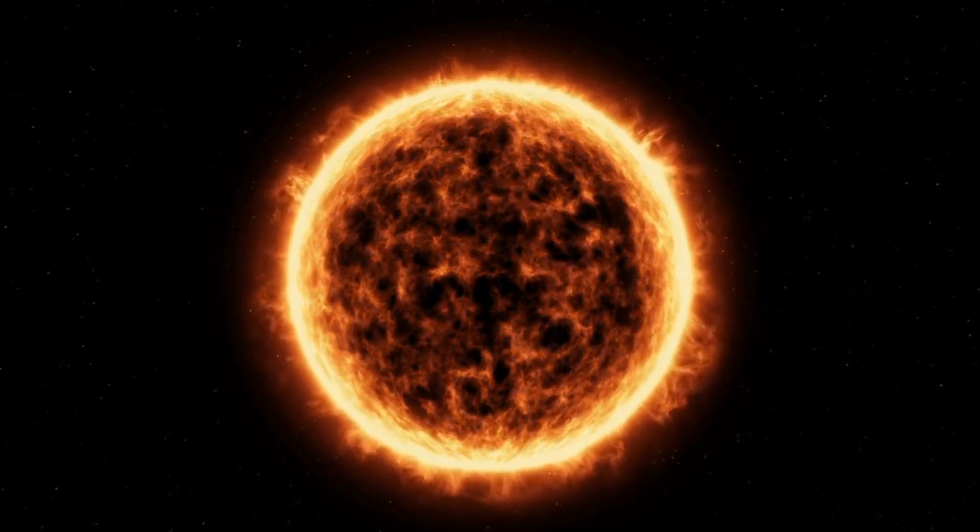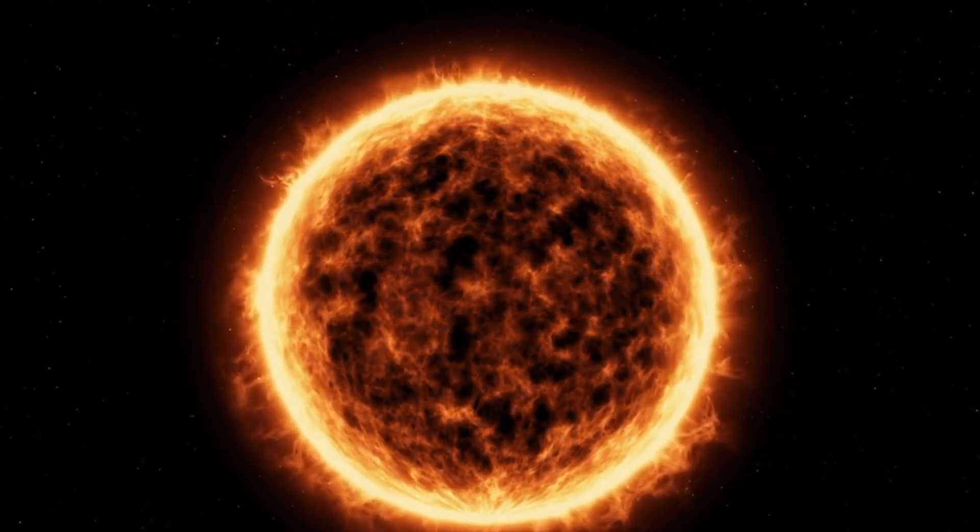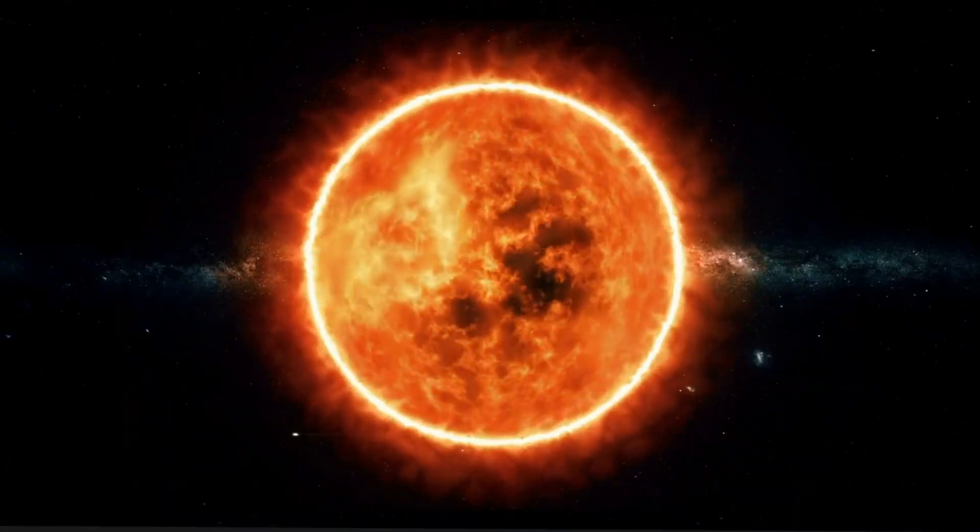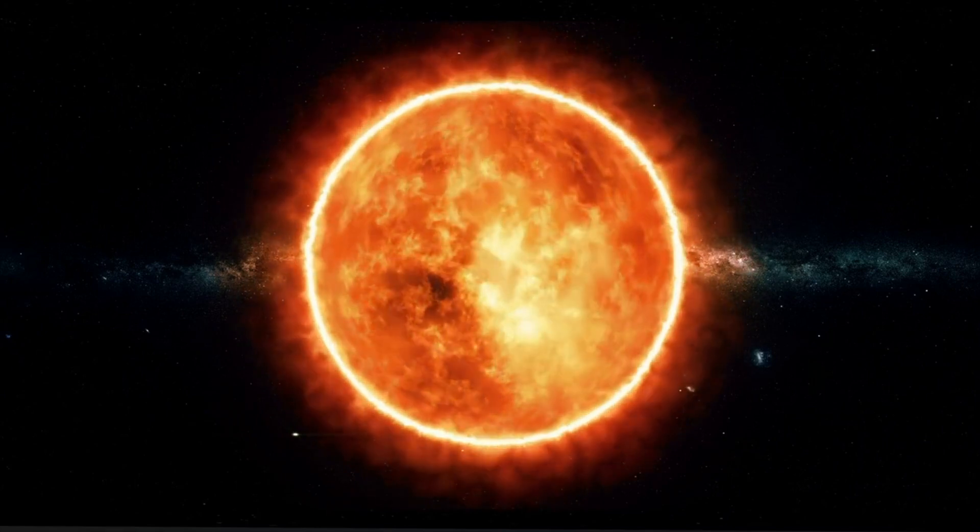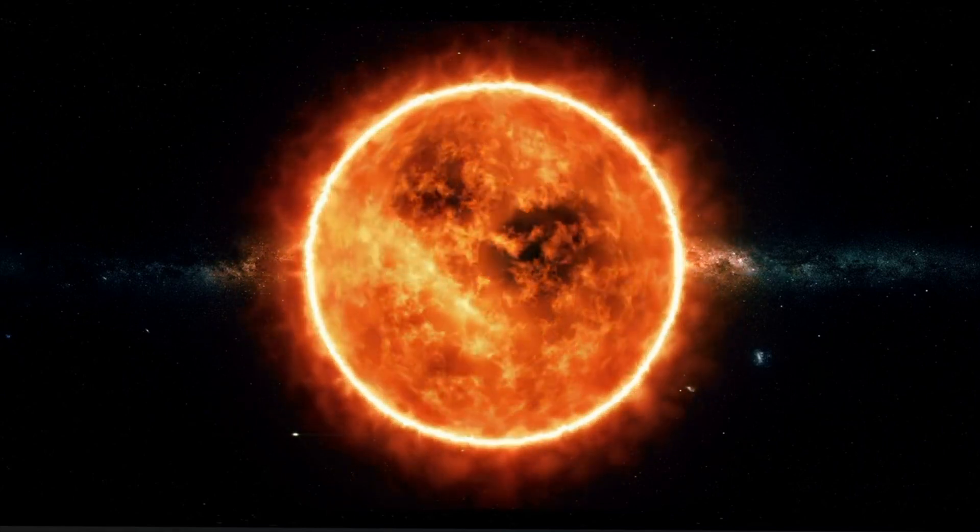The surface of the sun, for example, has a temperature of around 5,500 degrees Celsius, which is already extremely hot. But the temperatures reached in quark-gluon plasma are many times higher than that, reaching several trillion degrees Kelvin.